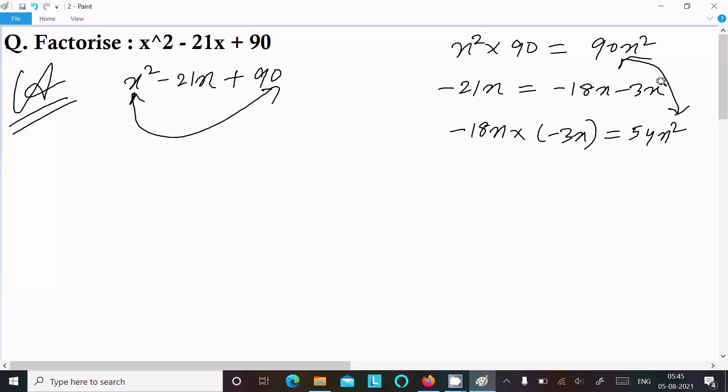The next that I'm going to try, so -17x and here -4x. So it's equal to -21x. Now -17x into -4x.